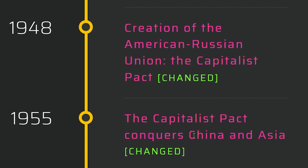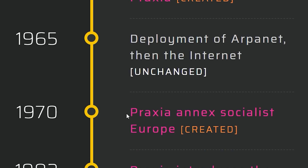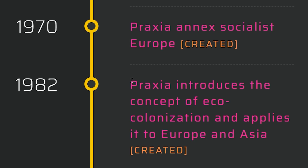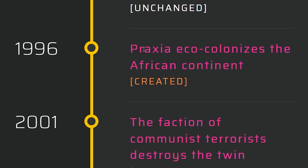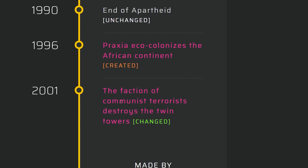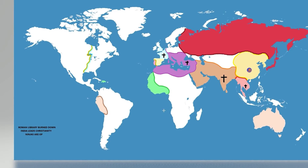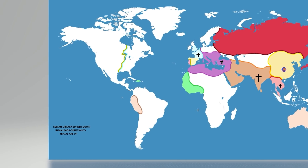The capitalist pact conquers China and Asia. Russia and America merge into one country — Proxia. Proxia annexes socialist Europe. Proxia introduces the concept of eco-colonization and applies it to Europe and Asia. Proxia eco-colonizes the African continent. So it sounds like we live in a capitalist mega-society.